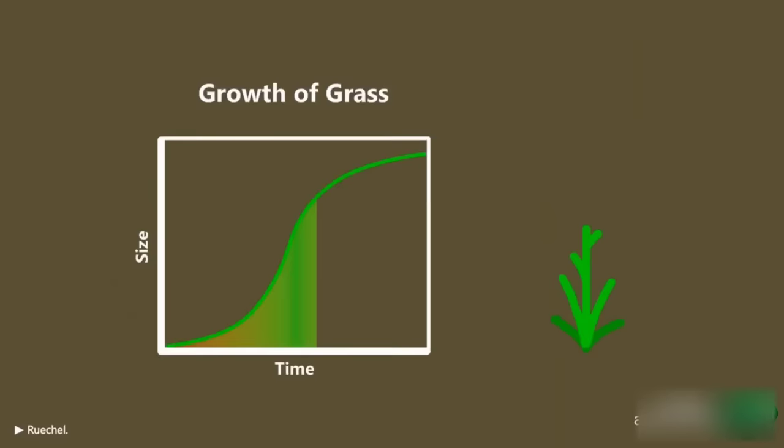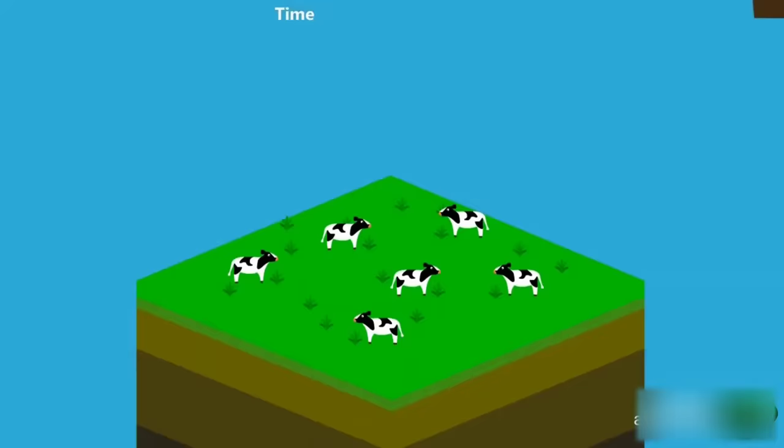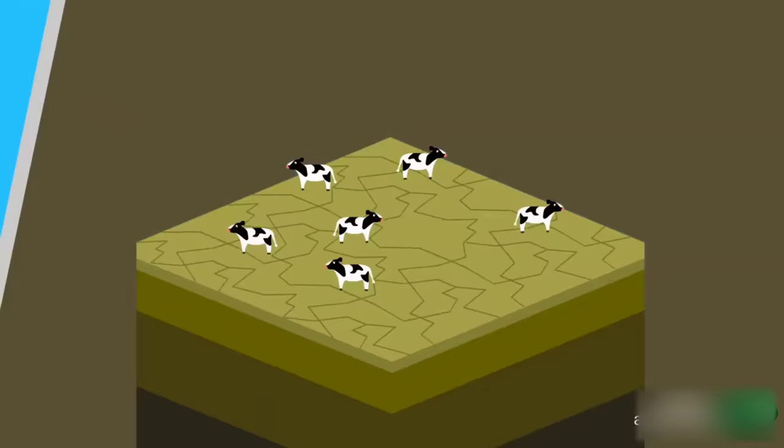The growth of grass tends to start slow, accelerate, and slow down again. This middle area is where it accrues the most biomass the most efficiently. If it's eaten before it gets to this point, its growth will never speed up. This is what happens with traditional pastured animals. They eat all the grass, which doesn't have the chance to grow back fast enough before getting eaten again, and we have overgrazing. This leads to soil erosion, drought, and desertification.